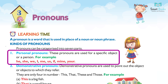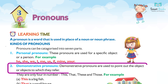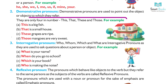One: Personal pronouns. These pronouns are used for a specific object or a person. For example: he, she, we, I, me, us, mine, your. Two: Demonstrative pronouns. Demonstrative pronouns are used to point out the object or objects to which they refer. They are only four in number.